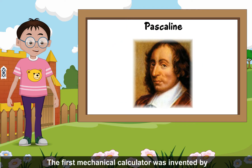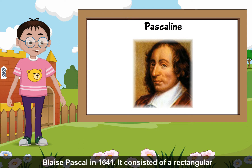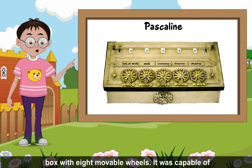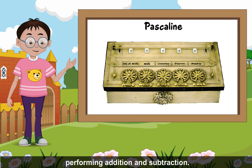Pascaline: The first mechanical calculator was invented by Blaise Pascal in 1641. It consisted of a rectangular box with 8 movable wheels. It was capable of performing addition and subtraction.